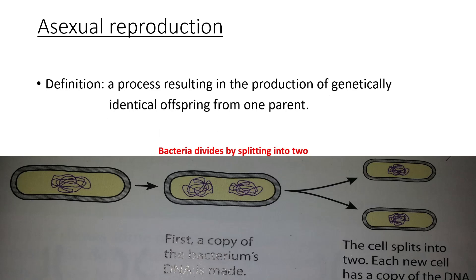So firstly, asexual reproduction. The definition is a process resulting in the production of genetically identical offspring from one parent. Once a flower reproduces, the new flower is genetically the same — same features, same immune system, everything completely identical. This is how bacteria divides by binary fission: a copy of the bacterium DNA is made, then the cell splits into two, each new cell has a copy of the DNA — this is called mitosis or cell division.